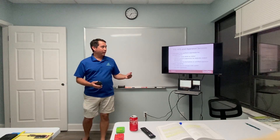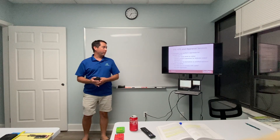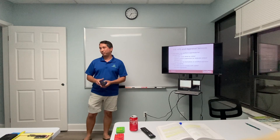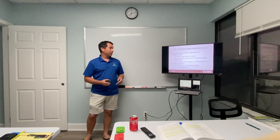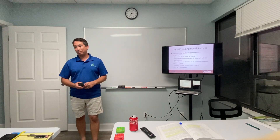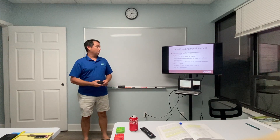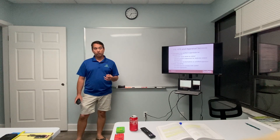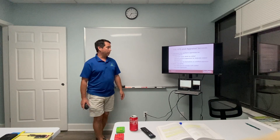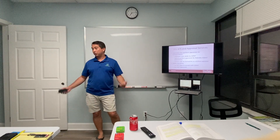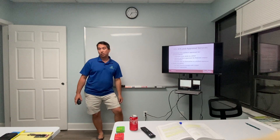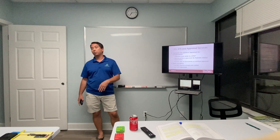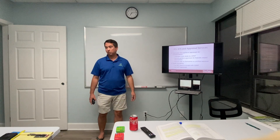Under Chapter 475, licensees may perform appraisals for compensation, but they can't be federally related and must conform to USPAP. You'll see a question on this on the state exam. Licensees also can't refer to themselves as a certified appraiser unless they actually are one — some real estate agents do hold dual licenses. To become a certified appraiser you do a two-year apprenticeship, but there's a lot of analytical work involved.